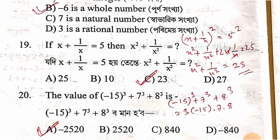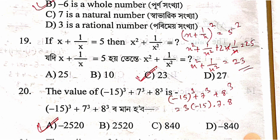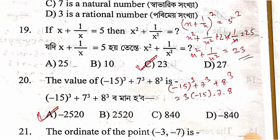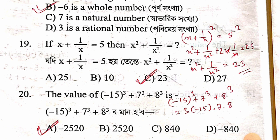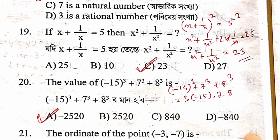If x + 1/x = 5, then x² + 1/x² is equal to: squaring both sides, (x + 1/x)² = 25, so x² + 2 + 1/x² = 25, giving x² + 1/x² = 23. The answer is 23.